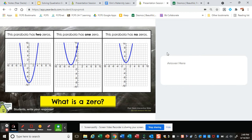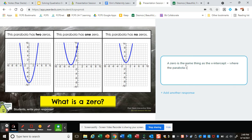This parabola has two zeros. This one in the middle has one zero. And the one at the end has no zeros. What is a zero? A zero is the same thing as the x-intercept, where the parabola crosses the x-axis.